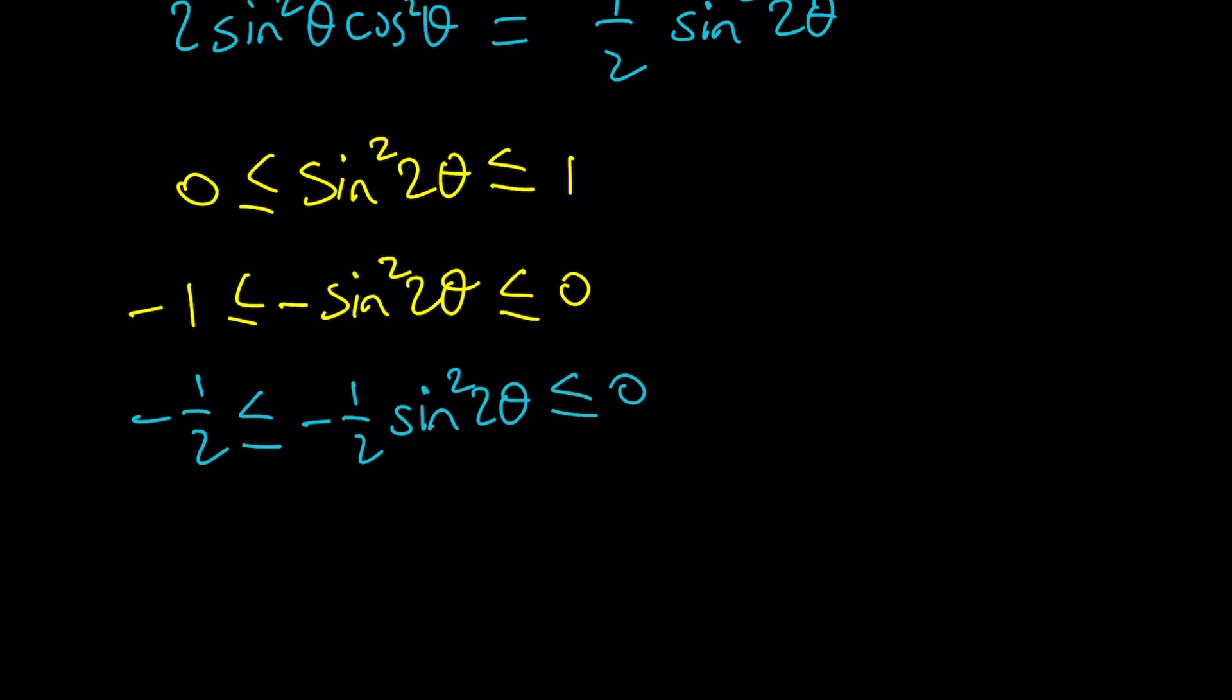That's going to give me -½sin²2θ between -½ and 0. Now, let's go ahead and add 1 to both sides. That's going to give me ½ and then 1 - ½sin²2θ, and that's going to be less than or equal to 1. This is the expression, and I know these are strict boundaries because we know that sine of any angle cannot exceed 1, so its square cannot exceed 1, and its square cannot be negative, so the minimum it can be is 0.